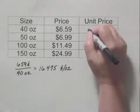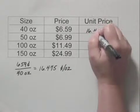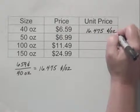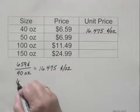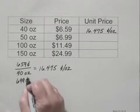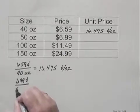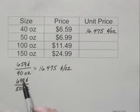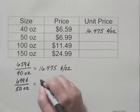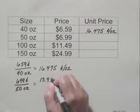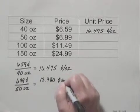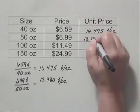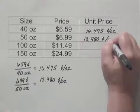We can write that unit price as 16.475 cents per ounce. For the second container, we have 699 cents over 50 ounces. When we divide 699 by 50, we get 13.980 cents per ounce. So write that as the unit price for the 50 ounce container.